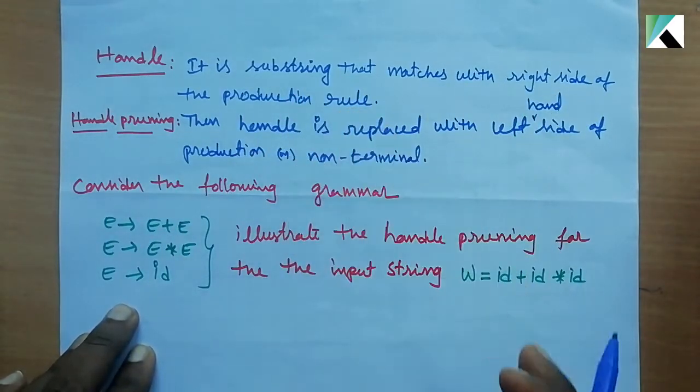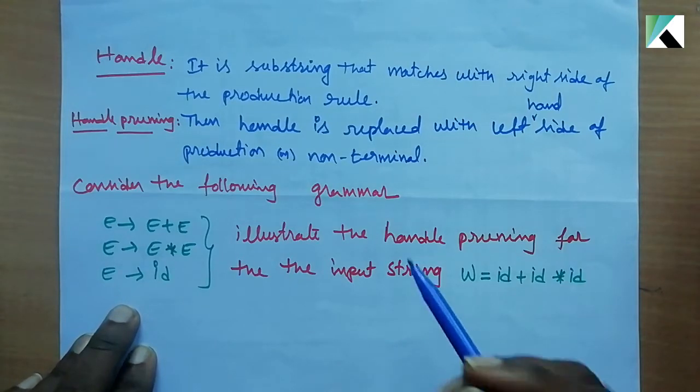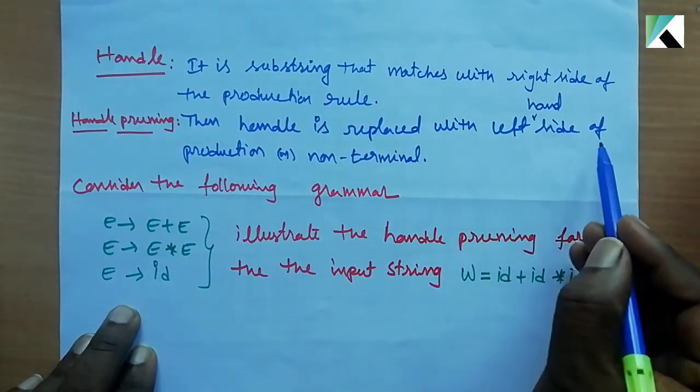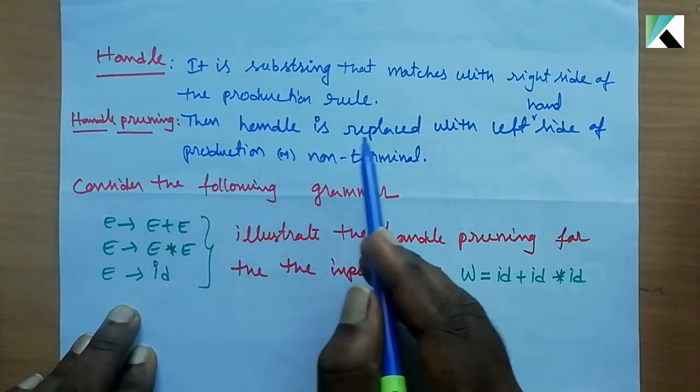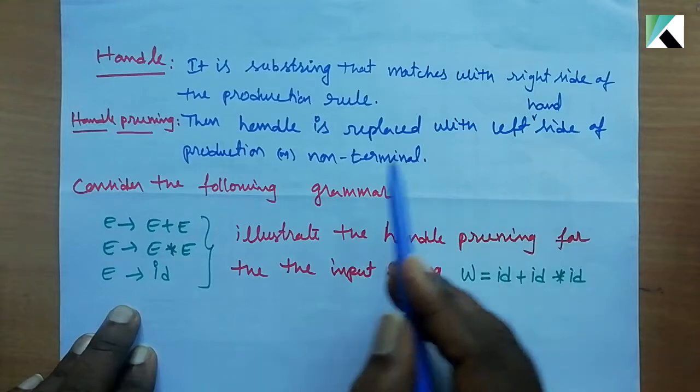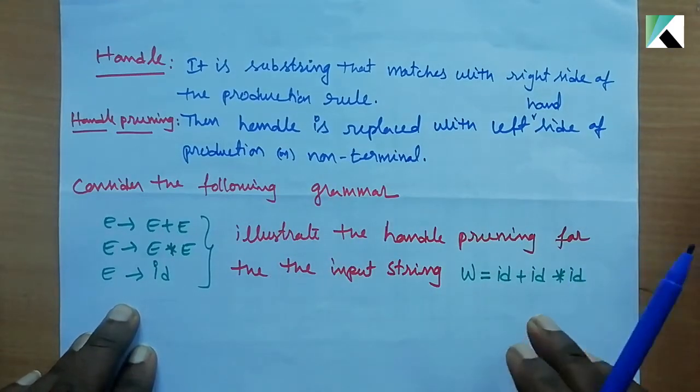The production rule's right-hand side is where they match. The handle is replaced with the left-hand side of the production. First time match, choose quality, replace. Bottom-up parsing uses the right side of the production rule.